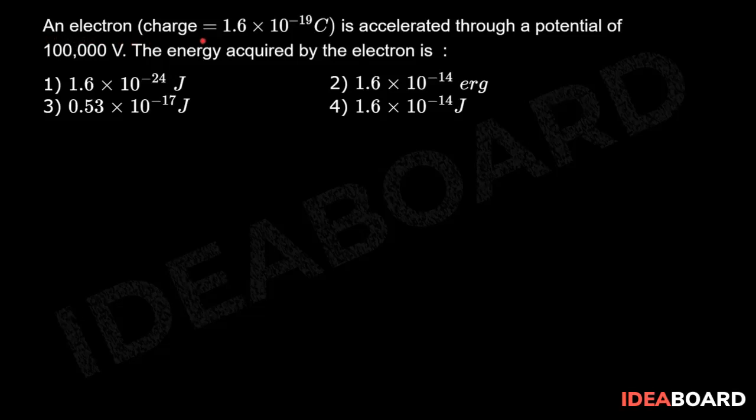An electron with charge equal to 1.6 × 10^-19 coulombs is accelerated through a potential of 100,000 volts. The energy acquired by the electron is: